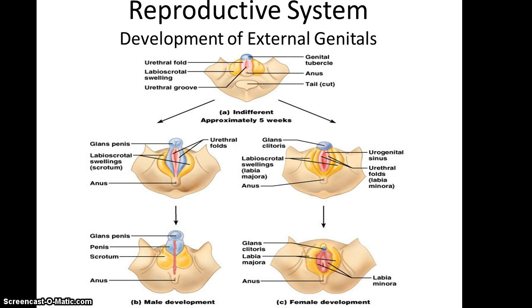Development of external genitalia in embryos occurs around five weeks, leading either toward male or female development. This is solely dependent on testosterone production and therefore the Y chromosome. Parts of the female and male genitalia are developmentally the same. There is also a disorder called intersex, or ambiguous genitalia, where infants are born with genitalia that is part way one way or the other. This is thought to occur more often in baby boys, possibly because of endocrine disruptors becoming more common in plastics and our environment.